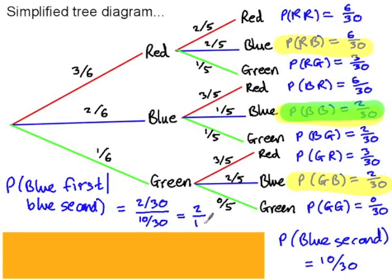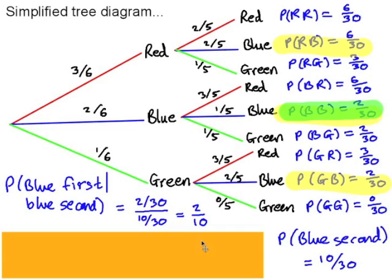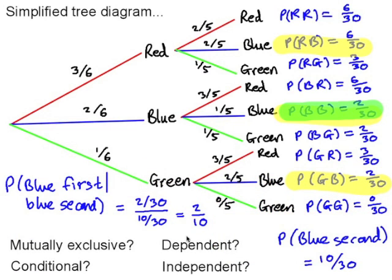So the probability of blue first given that we drew a blue second is two out of thirty over ten out of thirty, which is two out of ten. We're going to look at some vocabulary connected with probability and different scenarios where events are mutually exclusive, dependent and independent. We've already looked at conditional probability. I'd like you to pause the video and think about whether drawing the first marble and drawing the second marble are mutually exclusive, and whether they are dependent or independent.